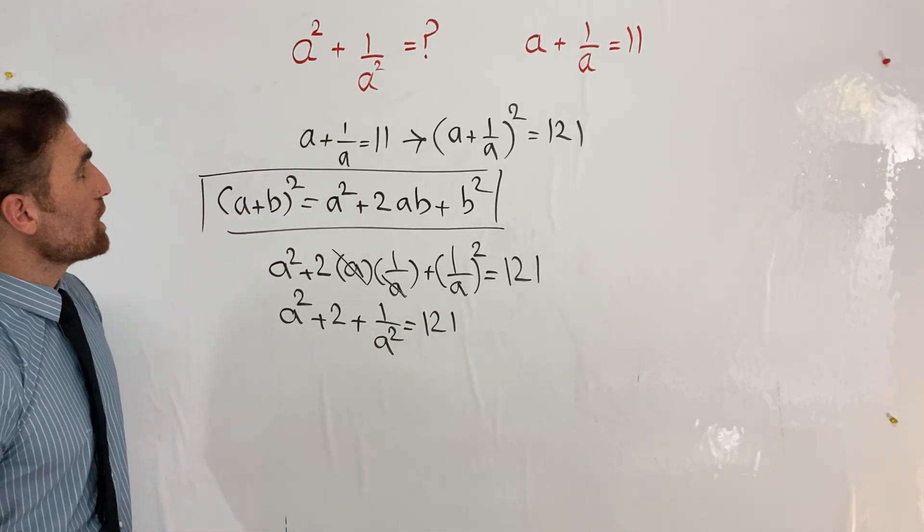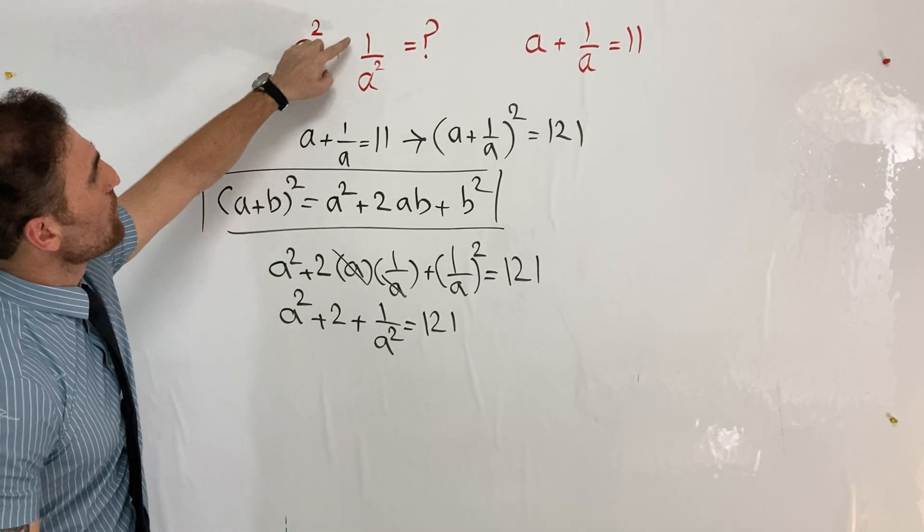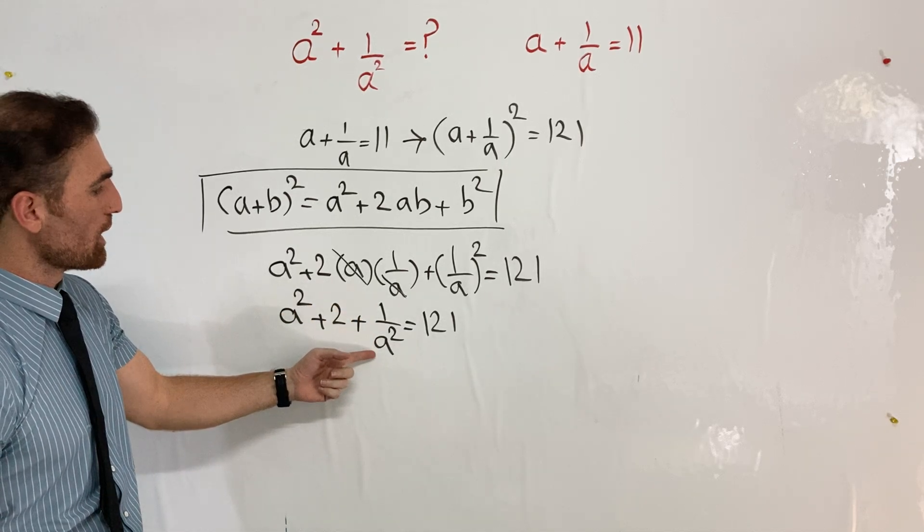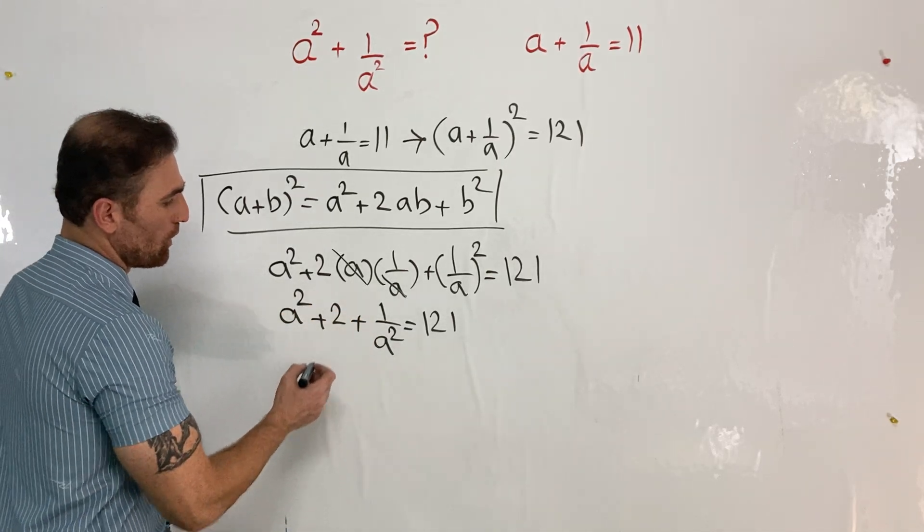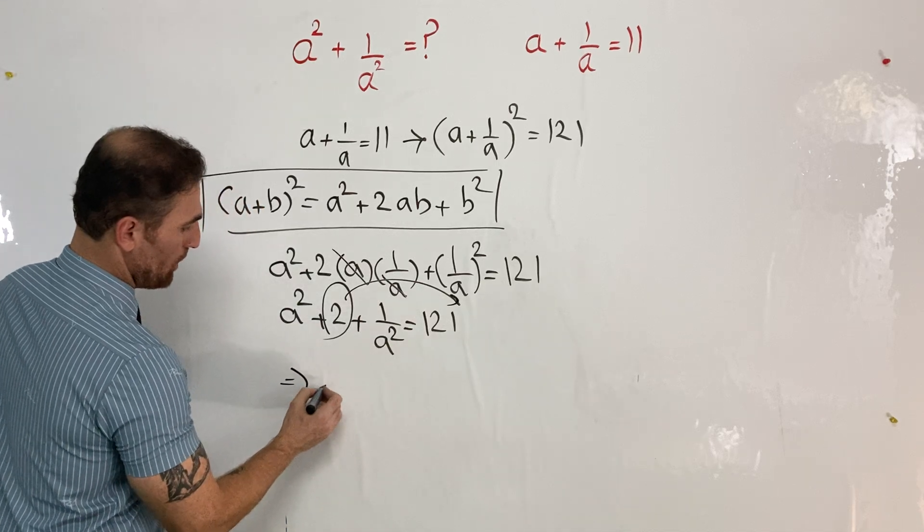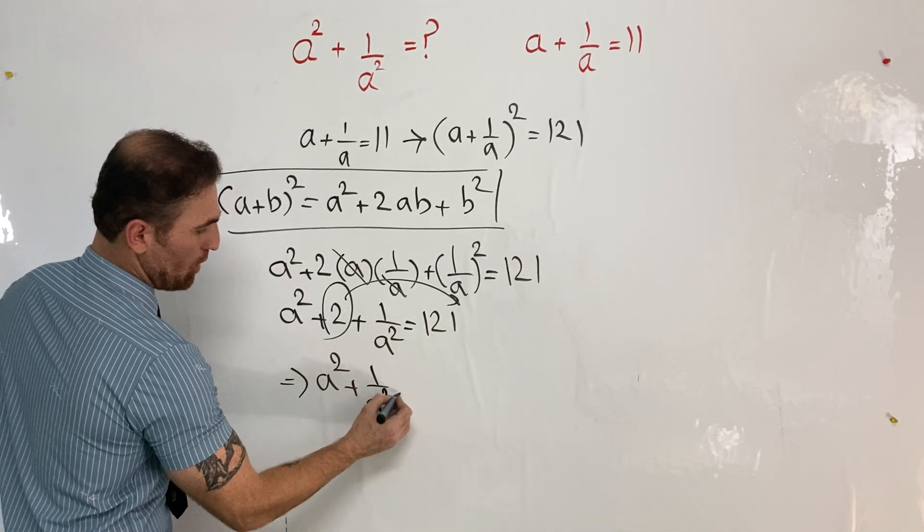The question asks us to find the value of a² + 1/a², but here we have a² + 2 + 1/a². So we transpose the 2 to the other side, giving us a² + 1/a² = 121 - 2.